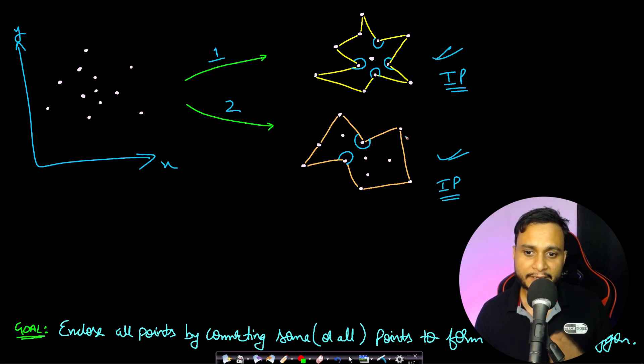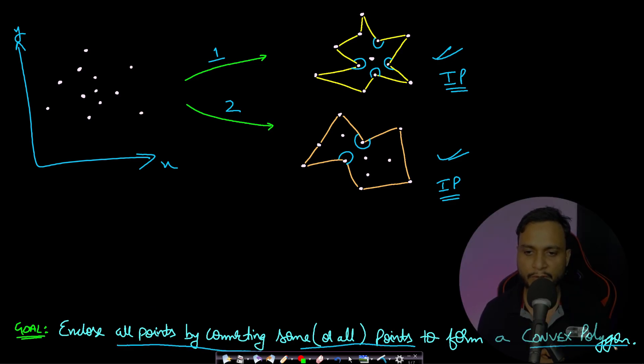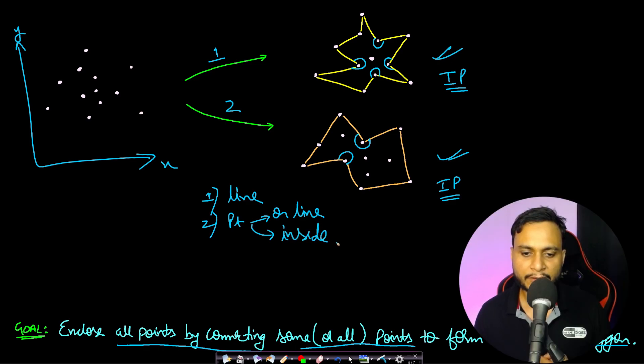Now what if I give a third constraint that enclose all the points by connecting some or all points to form a convex polygon. So the first condition was you have to use line segments, and then the second condition was the point can be on the line or it can be inside the figure, and none of the point should be outside of the figure, whatever is the enclosed structure you are making. And then if I add a third constraint that the polygon have to be a convex polygon not a concave polygon, then how will you actually solve the problem?